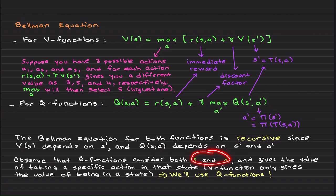And gives the value of taking a specific action in that state. However, V function only gives the value of being in a state. So basically, V function is better for problems where state representation is more relevant than specific actions.